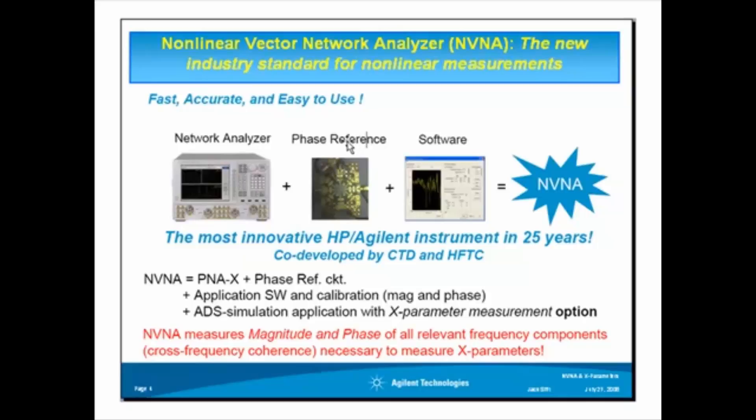So, the device under test, DUT, is placed, and the phase reference is hooked up to measure the amplitude and phase of the spectral components. These measurements are fully automated, and they're very quick.